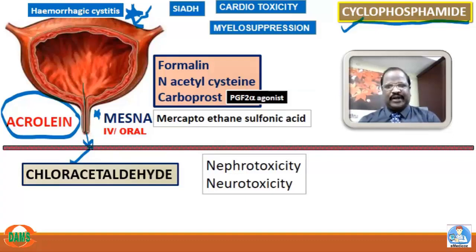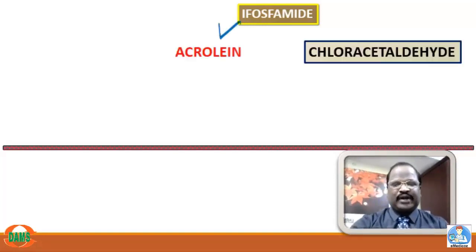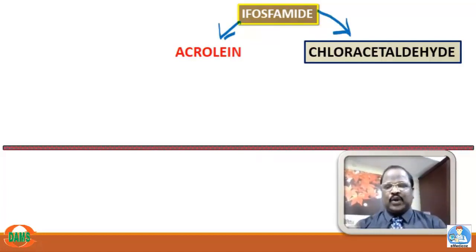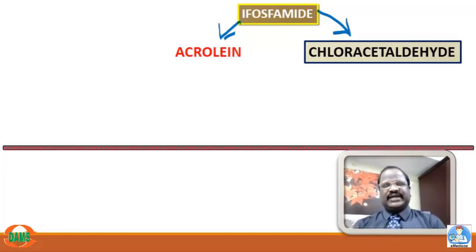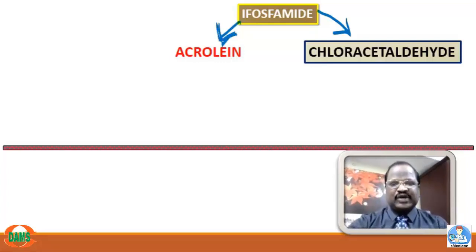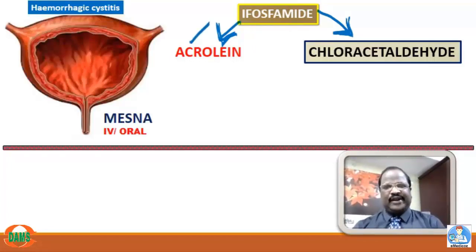Ifosfamide is an analog of cyclophosphamide. It also produces two important metabolites: acrolein and chloroacetaldehyde. However, these metabolites form slowly and accumulate in the body for a longer period, so ifosfamide causes more problems than cyclophosphamide. Since acrolein accumulates, it causes hemorrhagic cystitis — for which the same antidote, mesna, is used.